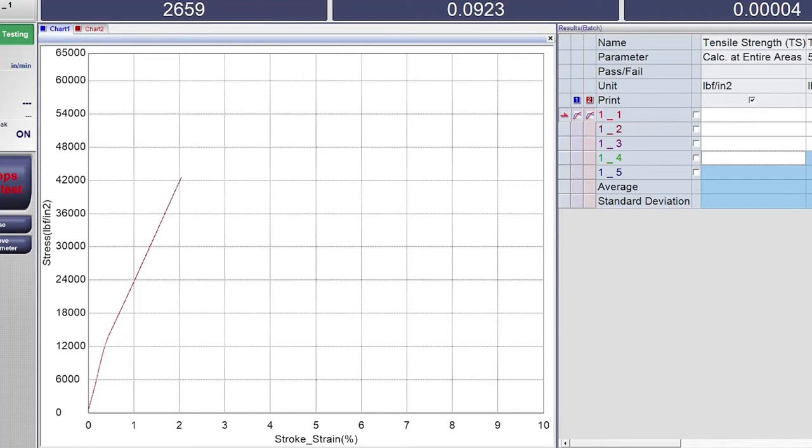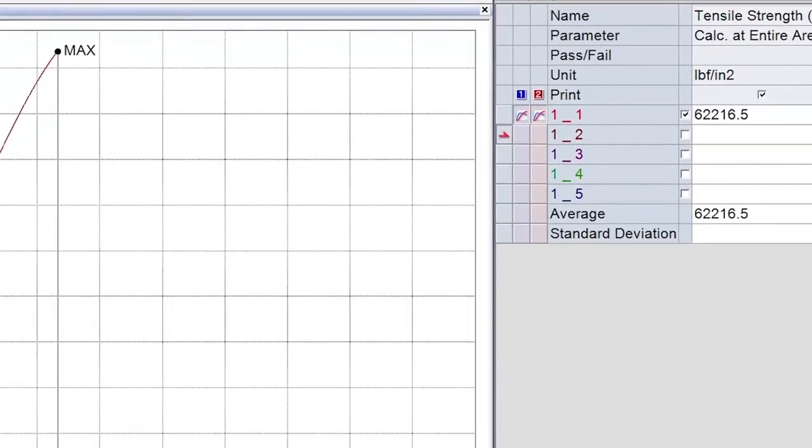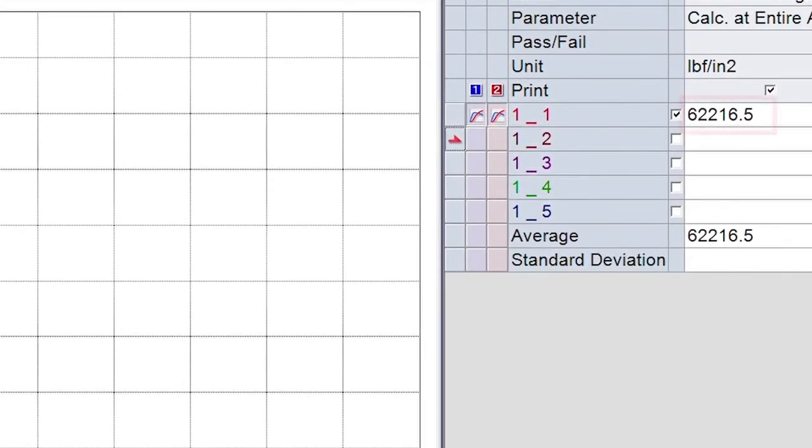But you can see the Chiron Max material keeps going. So we're now approaching 50,000 PSI, far exceeding anything else on the market. 54,000 PSI, approaching 60,000 PSI. We've surpassed 60,000 PSI. We're actually at 62,000 PSI.